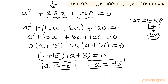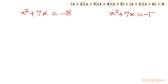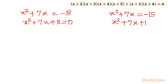Now putting back our substitution a = x² + 7x, we can frame two equations: x² + 7x = -8, giving x² + 7x + 8 = 0, and x² + 7x = -15, giving x² + 7x + 15 = 0.